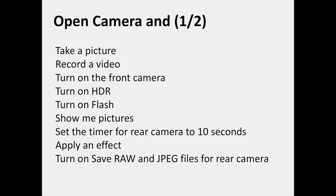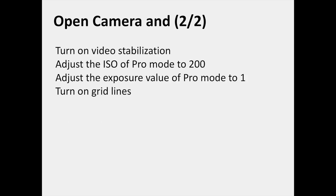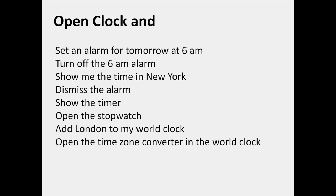In the Camera category, Bixby Voice can understand: take a picture, record a video, turn on the front camera, turn on HDR, turn on flash, show me pictures, set the timer for rear camera to 10 seconds, apply an effect, turn on Save RAW and JPEG files for rear camera, turn on Video Stabilization, adjust the ISO of Pro Mode to 200, adjust the exposure value of Pro Mode to 1, and turn on Gridlines.